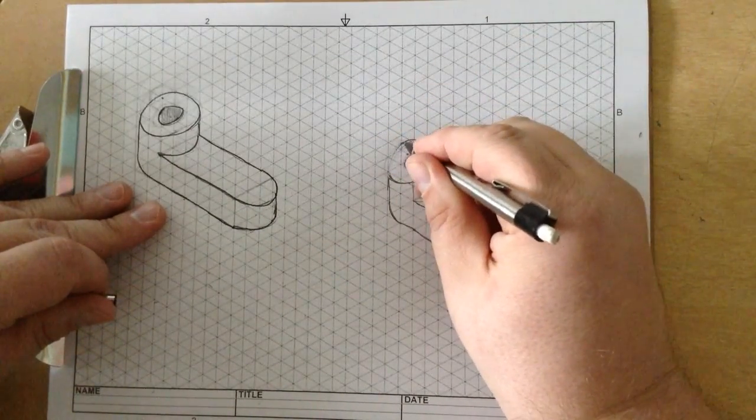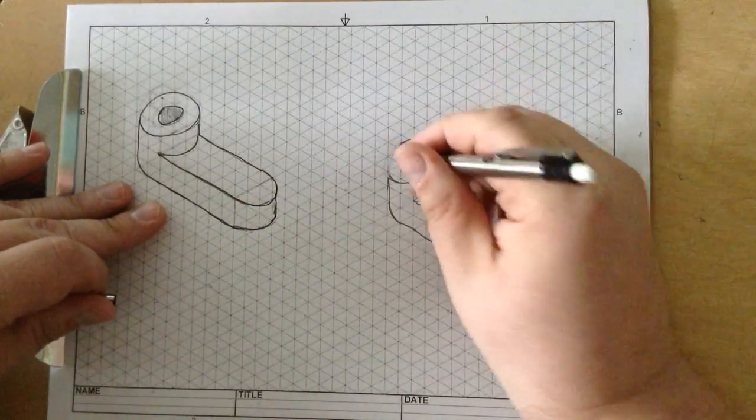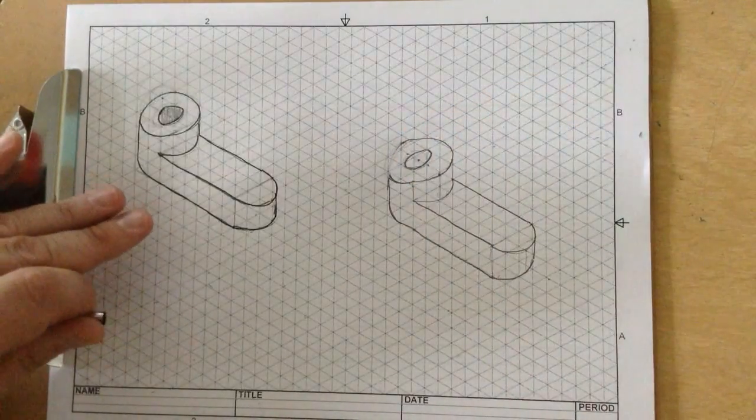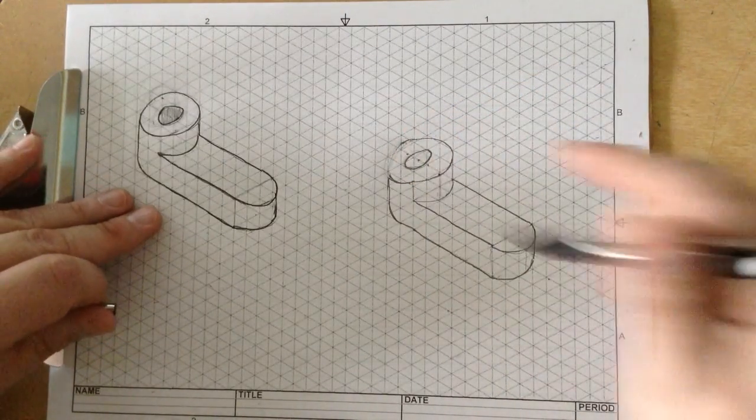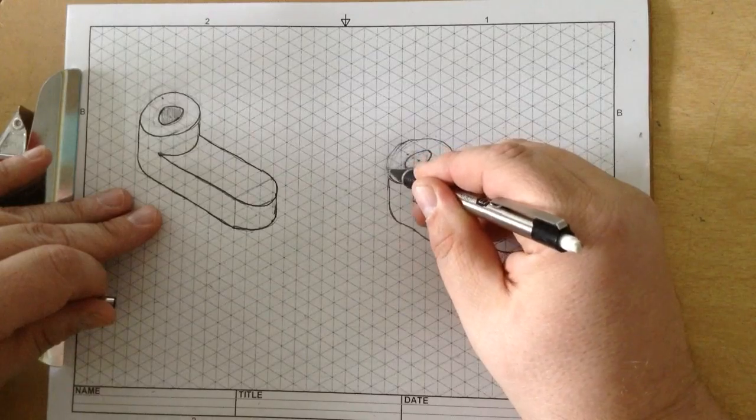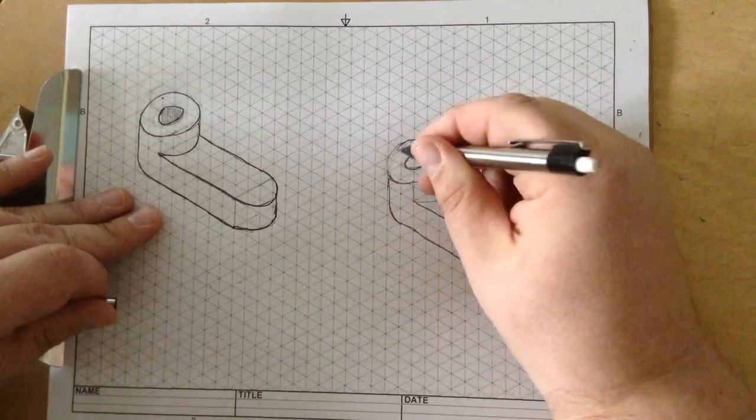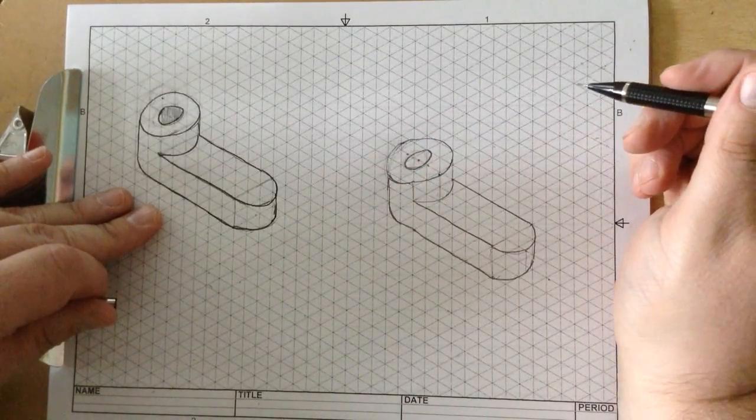Almost. Drawing a circle freehand is pretty tough. Okay, so I'm going to call it right there.